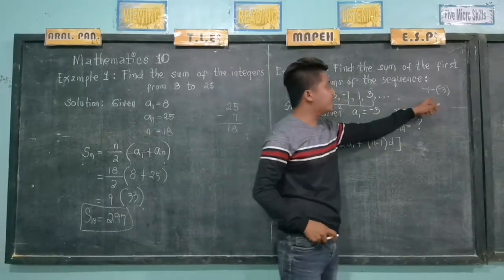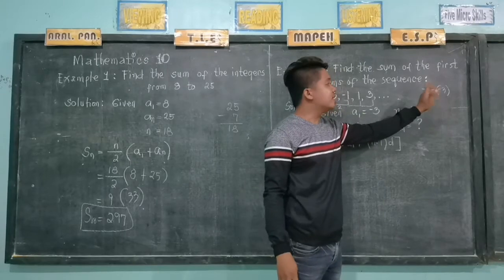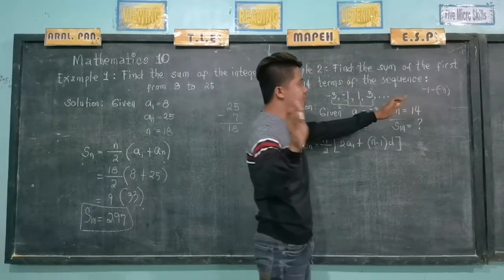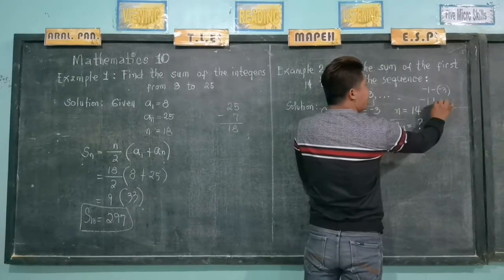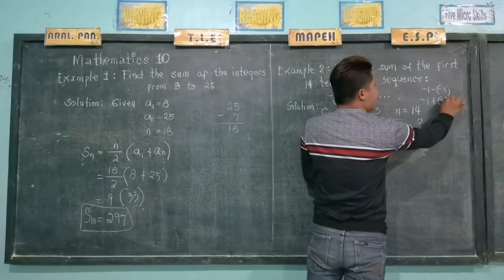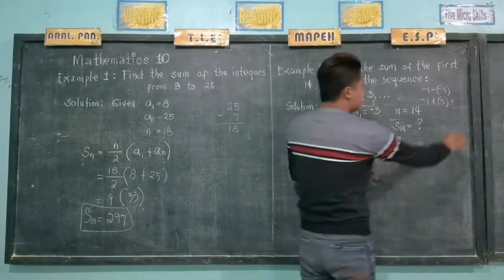The rule is, we will change the sign of the subtrahend and then proceed to addition. So therefore, we have negative 1 plus 3. And the answer is 2.